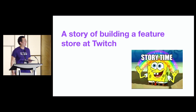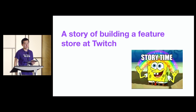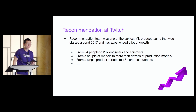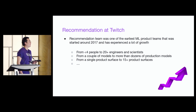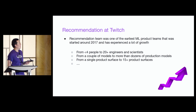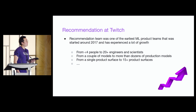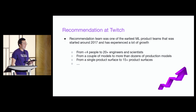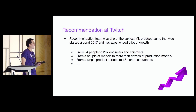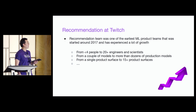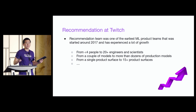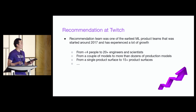I'd like to talk about the story of how we built the feature store at Twitch. It all starts from the recommendation team. The recommendation team is one of the earliest ML product teams at Twitch, formally started in 2017 by three or four people. In the last several years, Twitch has grown a lot, and so has the recommendation team. They now try to build more and more production models and put recommendation on a lot of services — the homepage, left navigation, channel page — powered by their recommendation service.